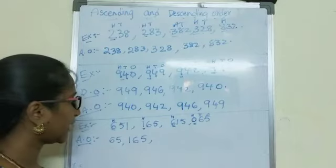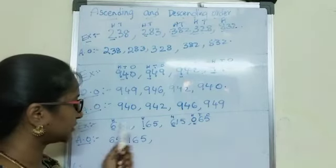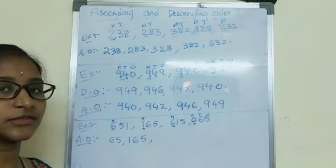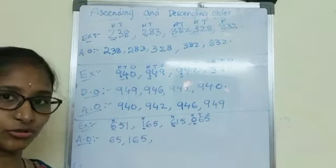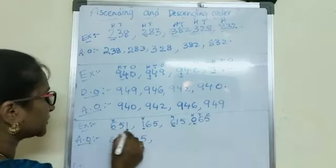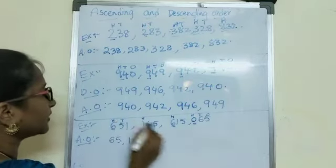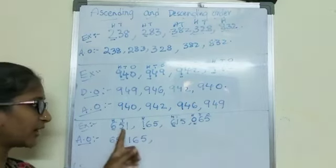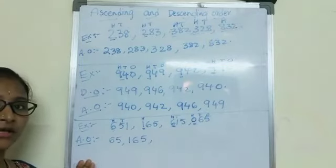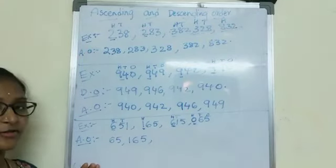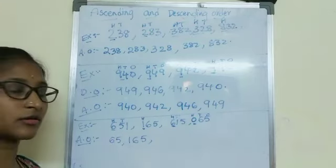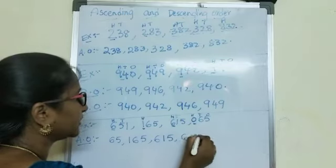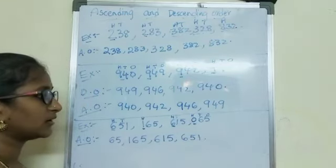Later on, I have two numbers with hundreds place 6. I should go with tens place. In this number tens place is 5, in this number tens place is 1. We are writing ascending order — small to big. 5 or 1, which is smaller? 1 is smaller. So I have to write 615, then 651. Did you all understand?